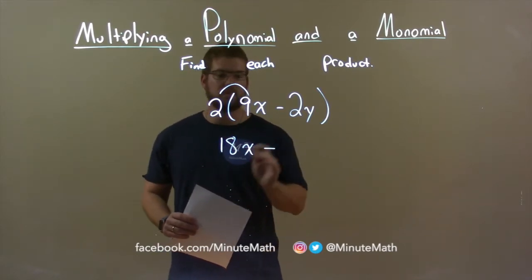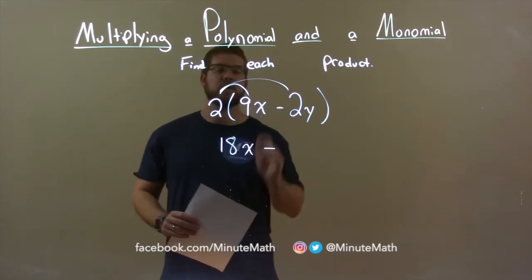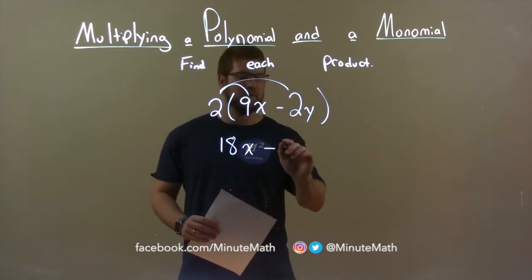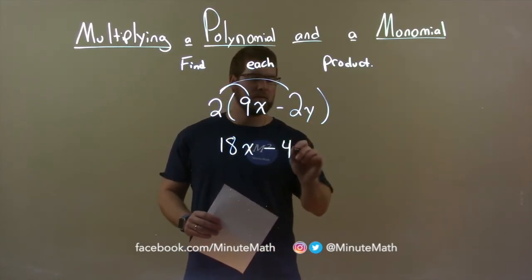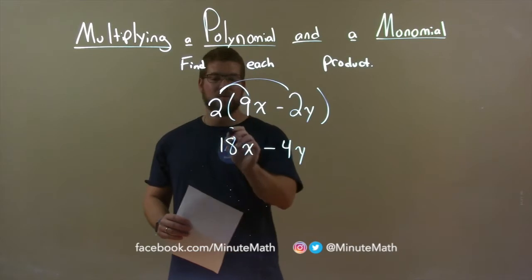Subtraction separates the two terms so we keep that there and now 2 times 2y. 2 times 2 is 4 and the y stays there and there we have it. Final answer, 18x minus 4y.